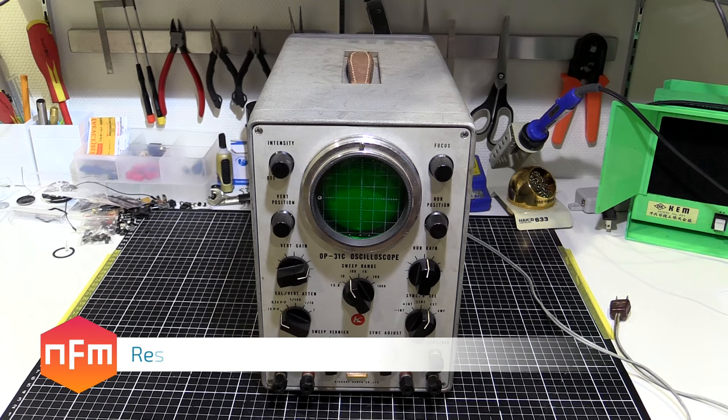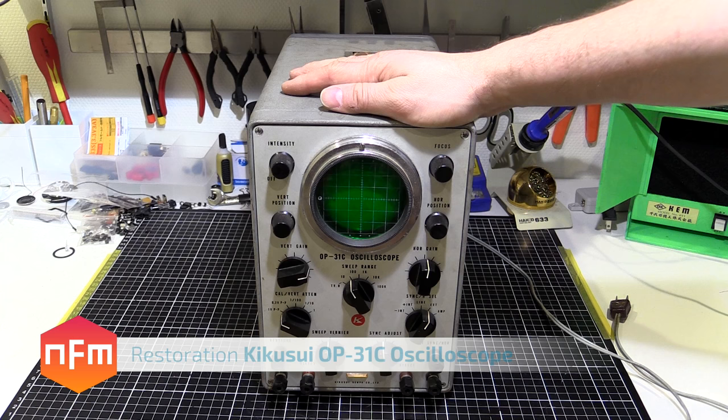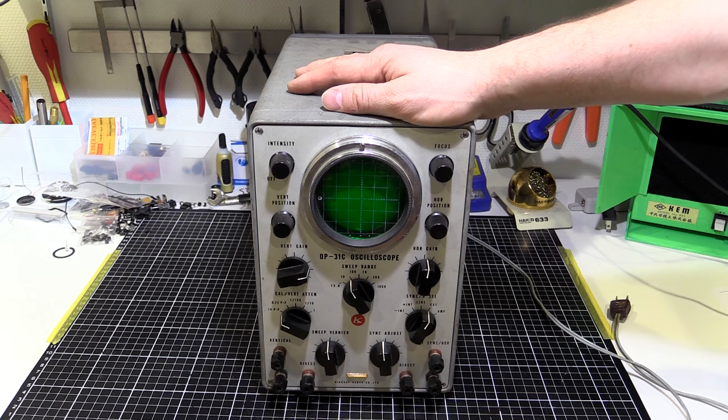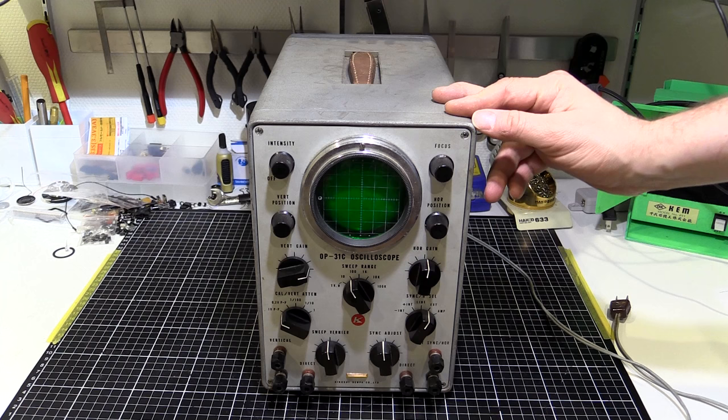Hey guys, got myself a bit of a score today. Got this OP-31C oscilloscope by Kikusui Electronics Corp in Japan. I was just out shopping and thought, hey, there's a secondhand store there, let's go have a look and see what they got. The usual white goods and clothes and stuff, but I found this thing just sitting on a shelf, not even close to where all the rest of the power tools were.